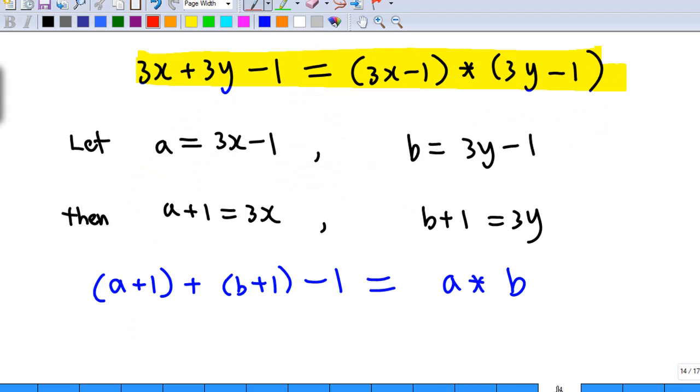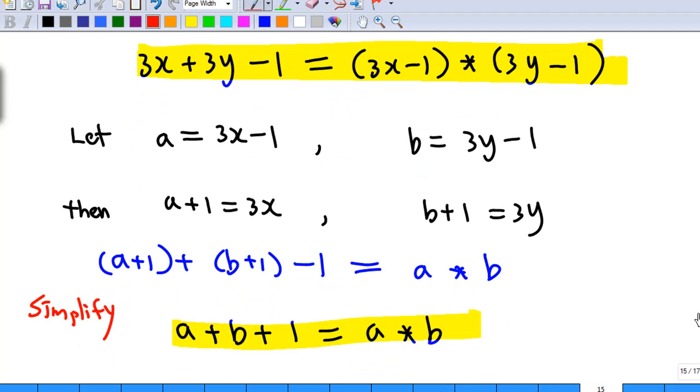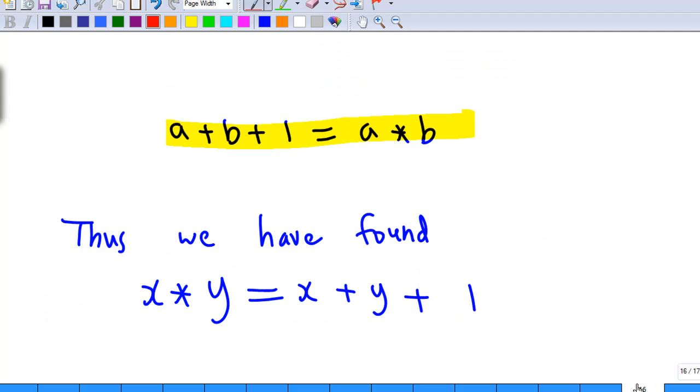If you write that in full, you'll get a plus 1 plus b plus 1 minus 1 equal to a star b. Now if we simplify the left-hand side, you'll find that a star b equals a plus b plus 1 after cancellation. So now we know what is the formula of a star b, which is a plus b plus 1. And since a and b are dummy variables, we know x star y equals x plus y plus 1.